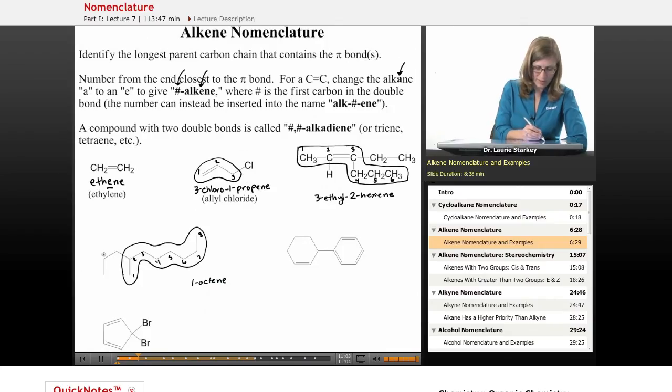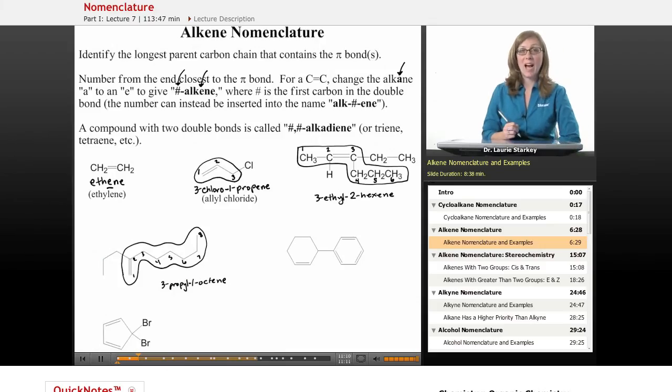And at carbon two, we have a one, two, three carbon chain. That's a propyl. 3-propyl-1-octene.